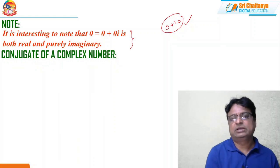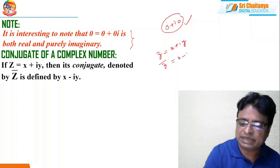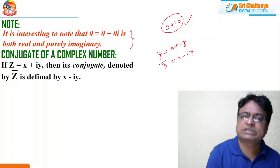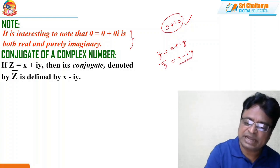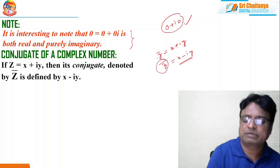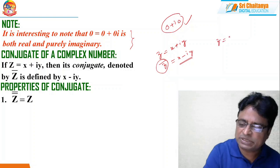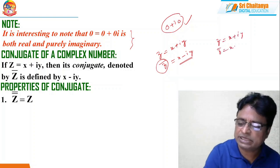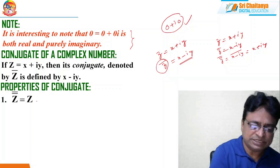Another important definition is the conjugate of the complex number. If z = x + iy is any complex number, then conjugate of z is denoted with z̄ and is defined as x − iy. That means we are just replacing +iy with −iy. That notation is denoted with z̄, read as 'z bar.' Now, the properties of conjugate: z̄̄ = z. If z = x + iy, then z̄ = x − iy. What is z̄̄? That is (x − iy)̄ = x + iy. As per the definition, that is why z̄̄ = z.